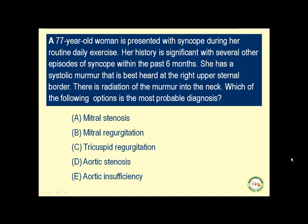A 77-year-old woman is presented with syncope during her routine daily exercise. Her history is significant for several other episodes of syncope within the past six months. She has a systolic murmur that is best heard at the upper right sternal border. There is radiation of the murmur into the neck. Which of the following options is the most probable diagnosis?